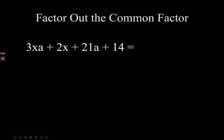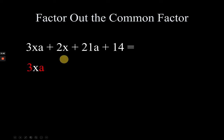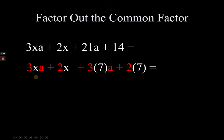Common factoring is done by factoring each term and then factoring out the common ones. So 3xa we write down as a separate term — I will use red and white color font, it will make sense later. You have 3xa, 2x with no further factoring, 21 is 3 times 7, and 14 is 2 times 7.